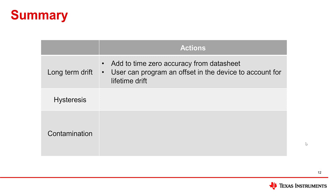Long-term drift is specified in humidity sensor datasheets as the maximum percent relative humidity per year that a sensor will drift in normal operating conditions. If the sensor has an offset correction register, this can be programmed to mitigate drift across the lifetime of the device. Hysteresis should be accounted for in time zero accuracy and is calculated as the delta between the percent relative humidity accuracy during positive and negative humidity sweeps.